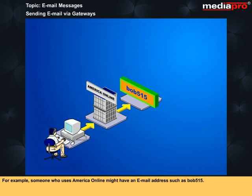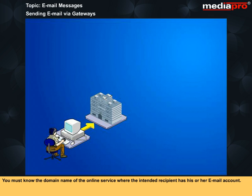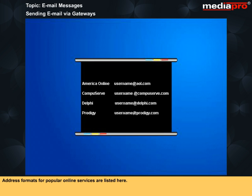Each online service has a gateway domain name that is part of the email address you use to send messages. For example, someone who uses America Online might have an email address such as bob515. If you attempt to send internet email to this address, the gateway will not be able to locate the account because the address does not follow the correct format of the domain name system. You must know the domain name of the online service. America Online has a domain name AOL.com, so the proper and complete email address would be bob515@AOL.com. Address formats for popular online services are listed here.